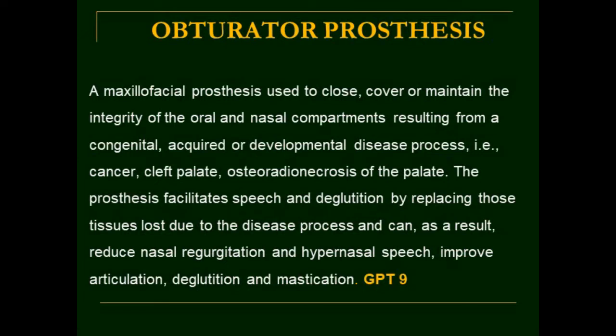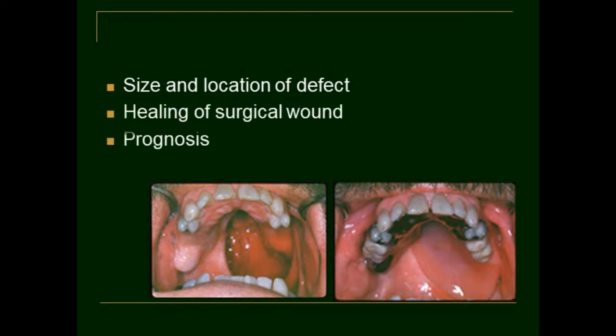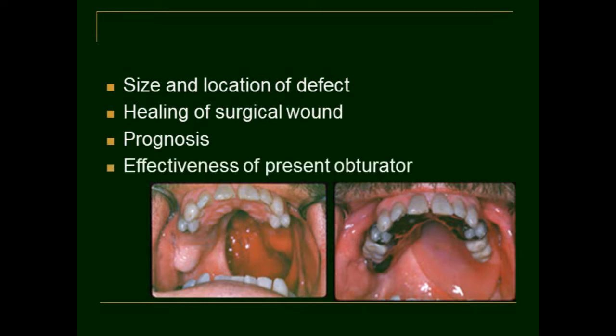We have already discussed the classification of obturator prosthesis. According to the phase of prosthetic construction, three types are: surgical or feeding plates, interim or transitional obturator, and definitive obturator. The definitive hollow bulb obturator is usually fabricated at around 6 months to 1 year after surgery. The timing of fabrication depends on many factors such as the size and location of the defect, healing of the surgical wound, prognosis of tumor recurrence control, and effectiveness of the present obturator.